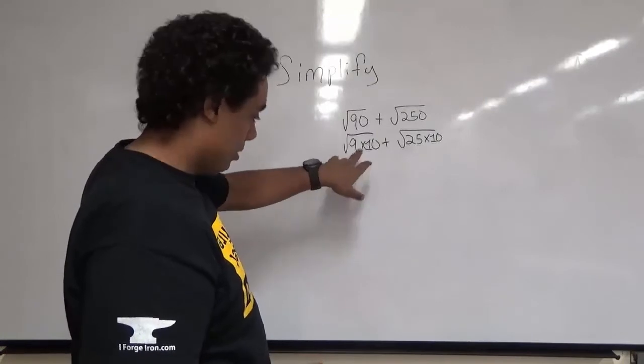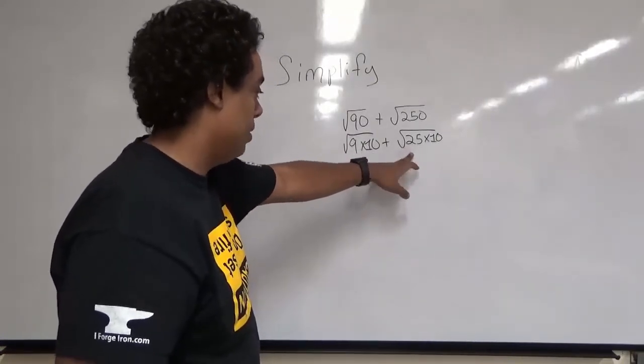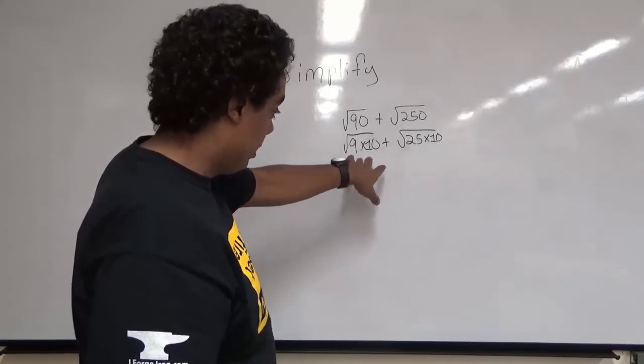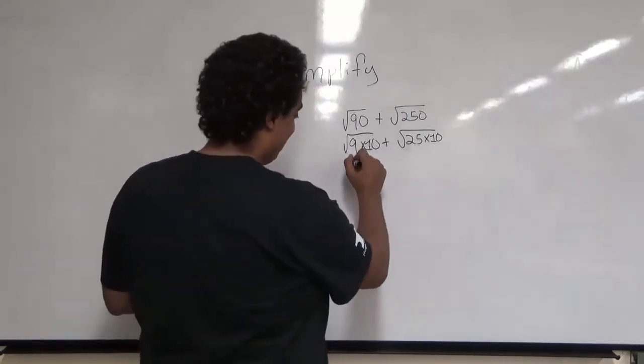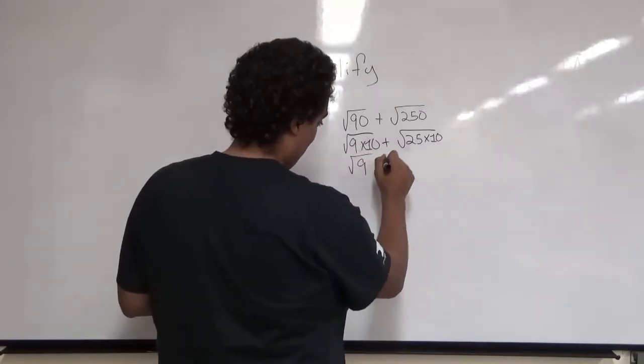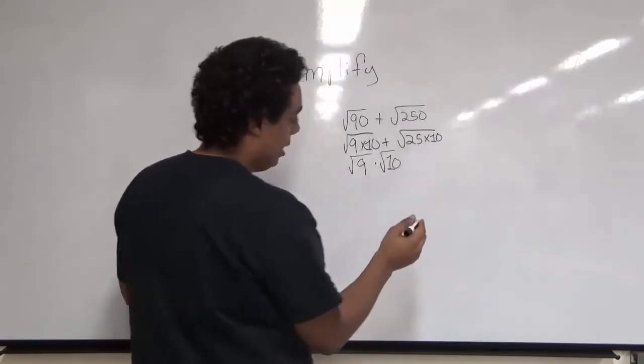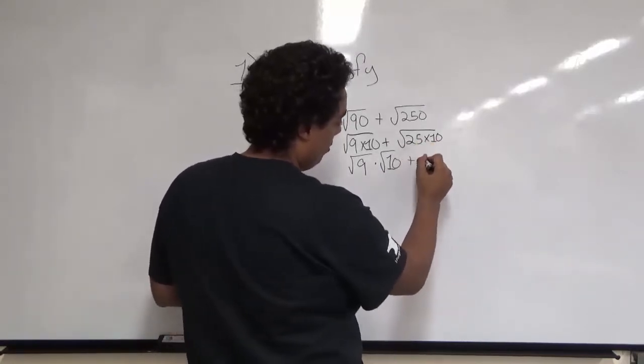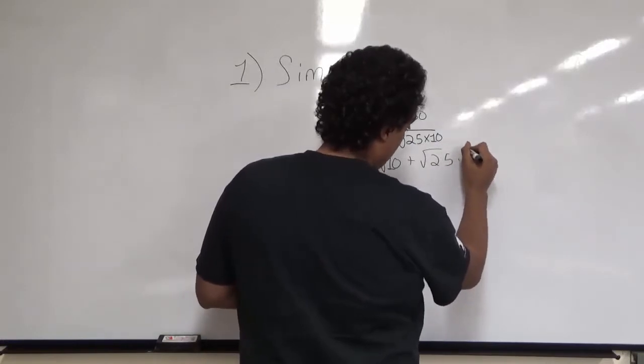Now, the square root of 9 is a perfect square, and the square root of 25 is a perfect square. So let's separate the two multiples to the square root of 9 times the square root of 10 plus the square root of 25 times the square root of 10.